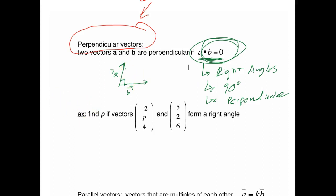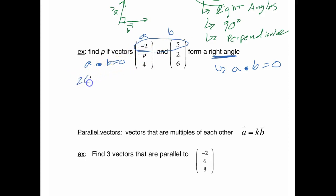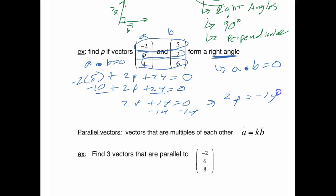Let's do an example. Find p if the two vectors form a right angle. The key phrase is 'form a right angle,' so you know that a dot b equals 0. Let's call these a and b. Multiplying corresponding parts: negative 2 times 5 plus 2 times p plus the final term, all equal to 0. Simplify, add like terms, subtract 14 from both sides to get 2p equals negative 14, then divide by 2. So p equals negative 7.